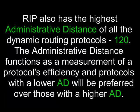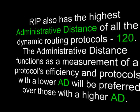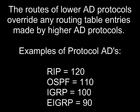RIP also has one of the highest administrative distances, or ADs, of all dynamic routing protocols — 120. The administrative distance functions as a measurement of a protocol's efficiency, and protocols with a lower AD will be preferred over those with a higher AD. The routes of lower AD protocols override any routing table entries made by higher AD protocols.